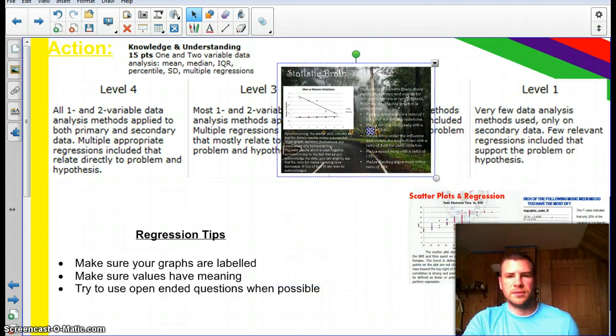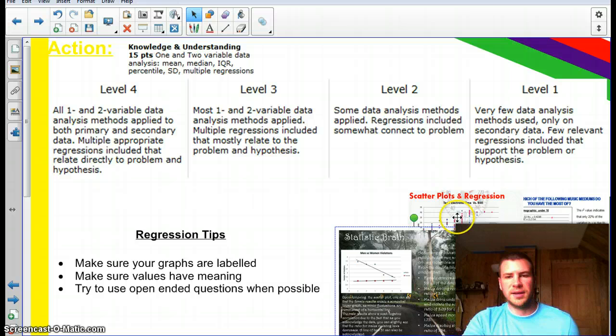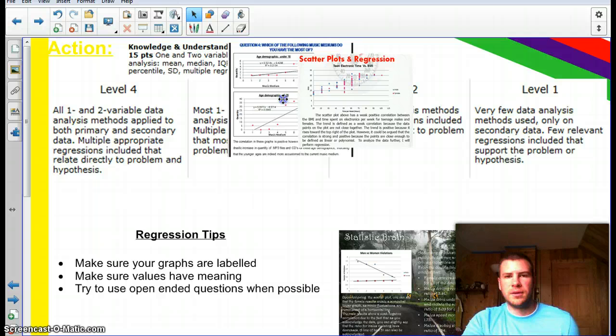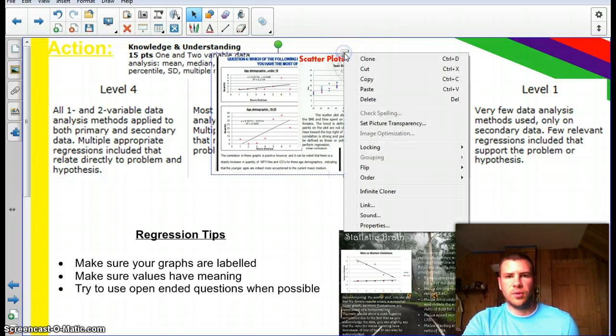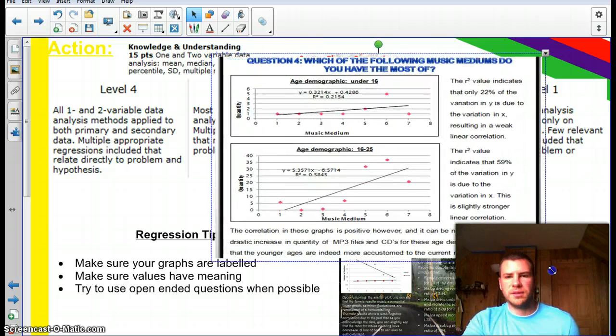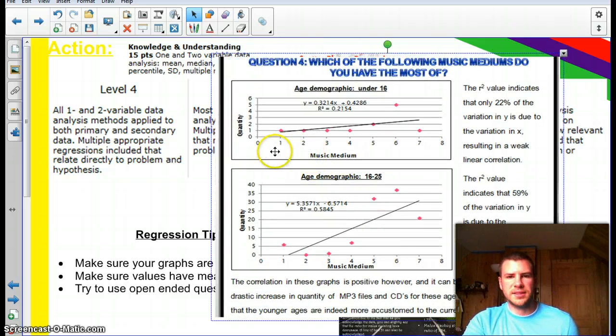So, number one, make sure the graphs are labeled. Before that, make sure you get some data, collect enough so that you can have some reasonable regressions taking place. Number two, make sure the values have meaning. So, there is an example here as well where we've got, from the music study, and this was a level three, four overall. But what you'll notice if you look at this regression in particular is that along the x-axis, the music medium has been given a value from zero to eight. And that simply represents the type of medium that's used. Now, you have to think to yourself if you've quantified a qualitative variable, like in this case, what music medium do you have experience with? CDs, DVDs, MP3, so on.